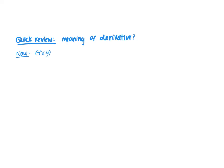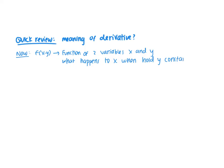So what we've been looking at recently is functions of two variables, sometimes three variables. Today we are going to look at a function of two variables, x and y. What we are asking, for example, is what happens to z when we hold y constant — in other words, how is x changing? What is the rate of change of x if y is held constant? This is called a partial derivative. If we hold y constant, what's the derivative with respect to x? If we hold x constant, what's the derivative with respect to y? It's called a partial derivative.